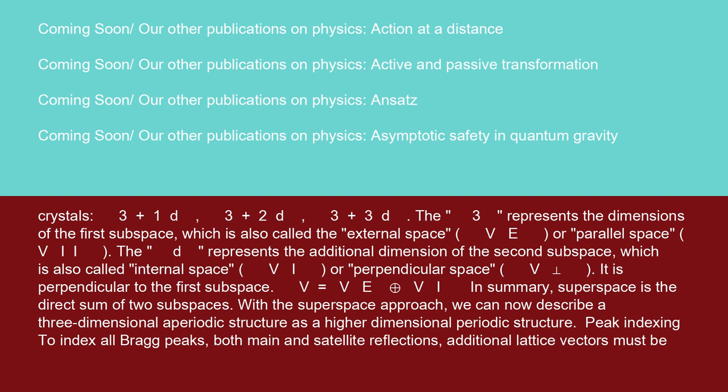With the superspace approach, we can now describe a three-dimensional aperiodic structure as a higher-dimensional periodic structure. Peak indexing: to index all Bragg peaks, both main and satellite reflections, additional lattice vectors must be introduced.